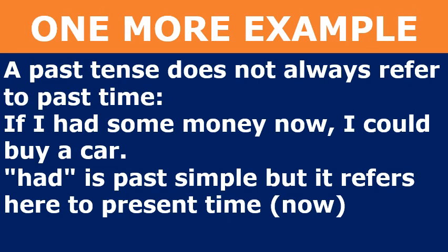One more example: a past tense does not always refer to past time. For example: 'If I had some money now, I could buy a car.' Here 'had' is past simple, but it refers to present time — that is, now. In that way, you must not go confused with present tense meaning present time, or past tense meaning past time.